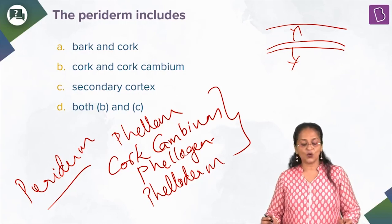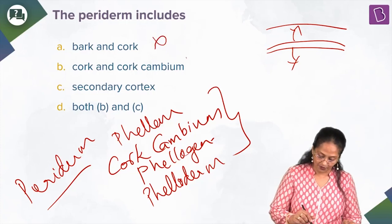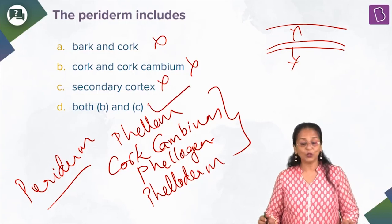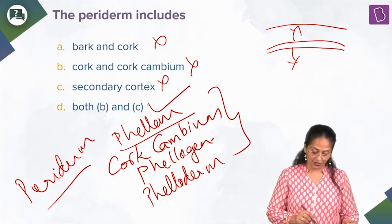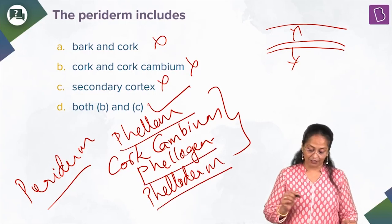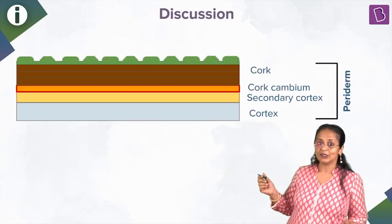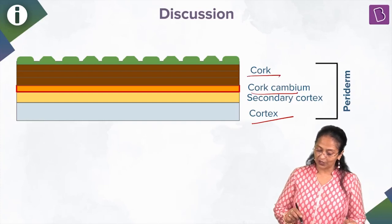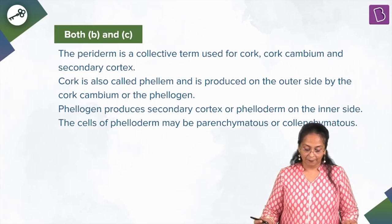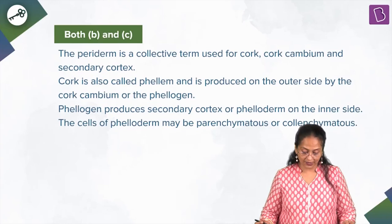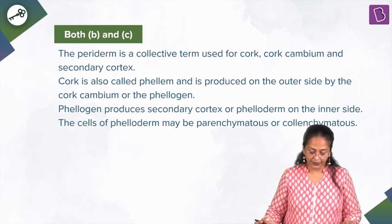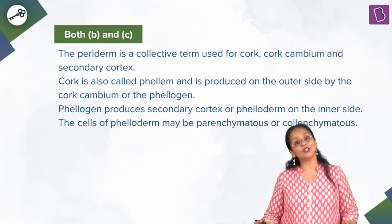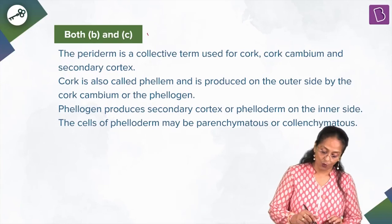All three — phellum, phelogen, and phelloderm — collectively are called the periderm. Now the options: periderm includes only bark and cork — no; only cork and cork cambium — no; secondary cortex only — no; but both cork and cork cambium AND secondary cortex — yes, both B and C, because periderm includes phellum (cork), phellogen (cork cambium), and phelloderm (secondary cortex). The cells of the phelloderm may be parenchymatous or collenchymatous in nature. The right answer is both B and C.